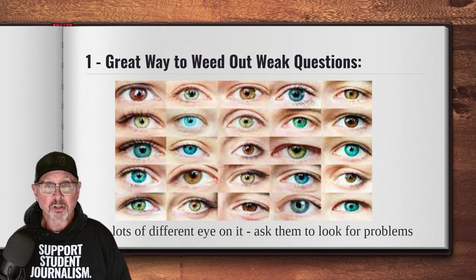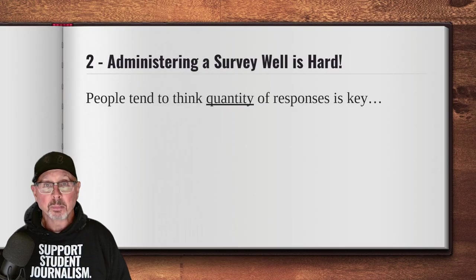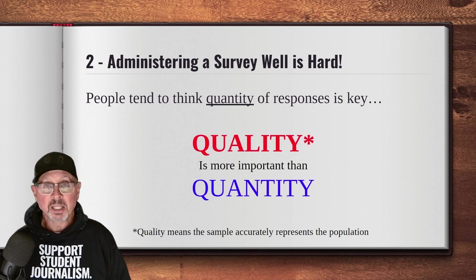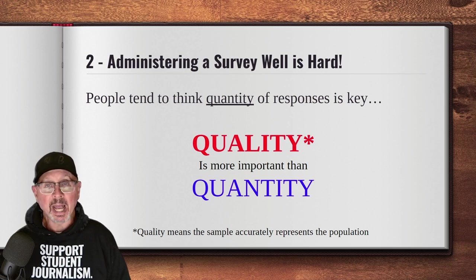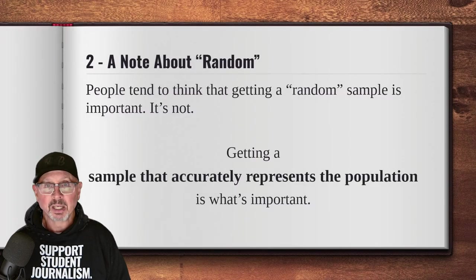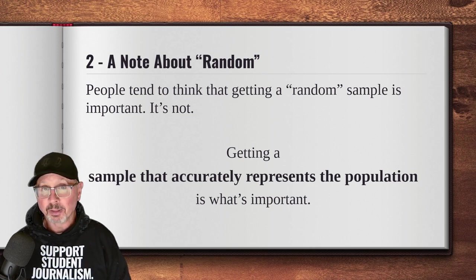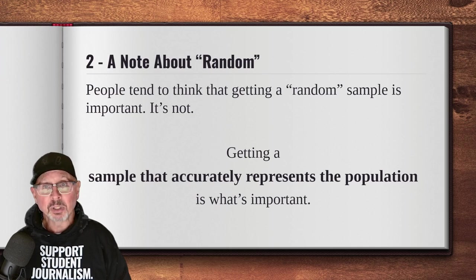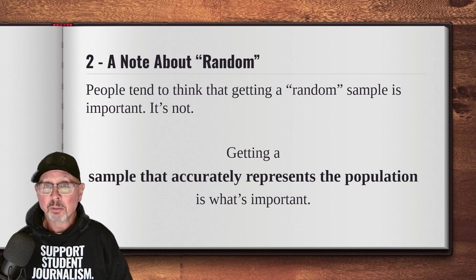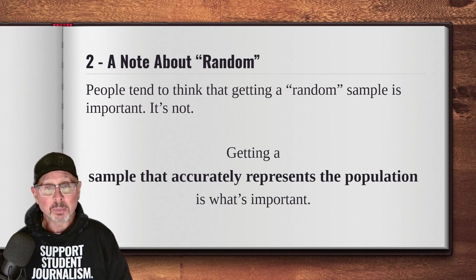Let's look at the process of administering your survey. Beginners have this myth about the quantity of respondents when they should be more focused on the quality of the data. By quality, we mean that the sample data accurately represents the population you're looking at. So how do you get quality data that accurately represents the population you're concerned about? If you survey 100 kids at a school of 2,000 students, but those 100 students accurately represent the population of the school in every way that's relevant to your survey, you have a great sample — that's quality data.